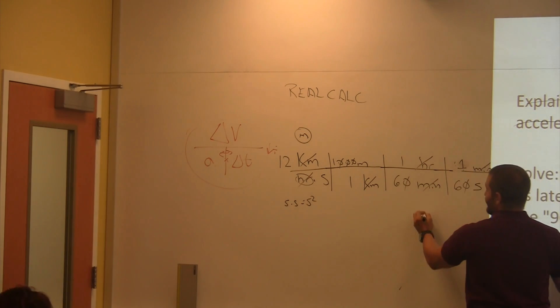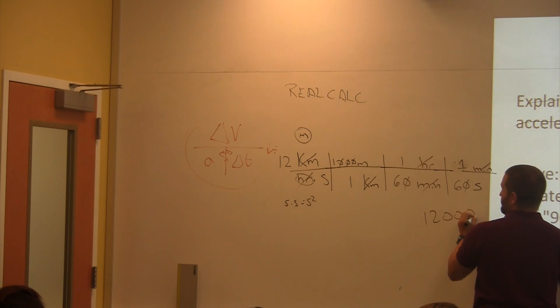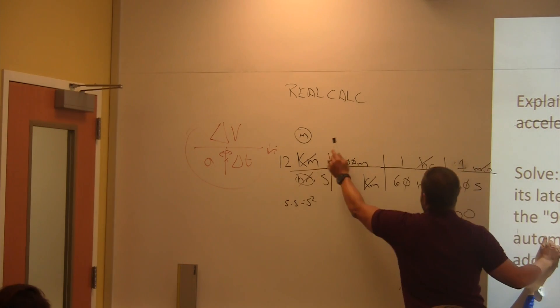That was the number I was talking about in the back. That was a good number, right? One, two, zero, zero, zero, zero. Right? Because I multiplied this times this times this times this, right? Yep.